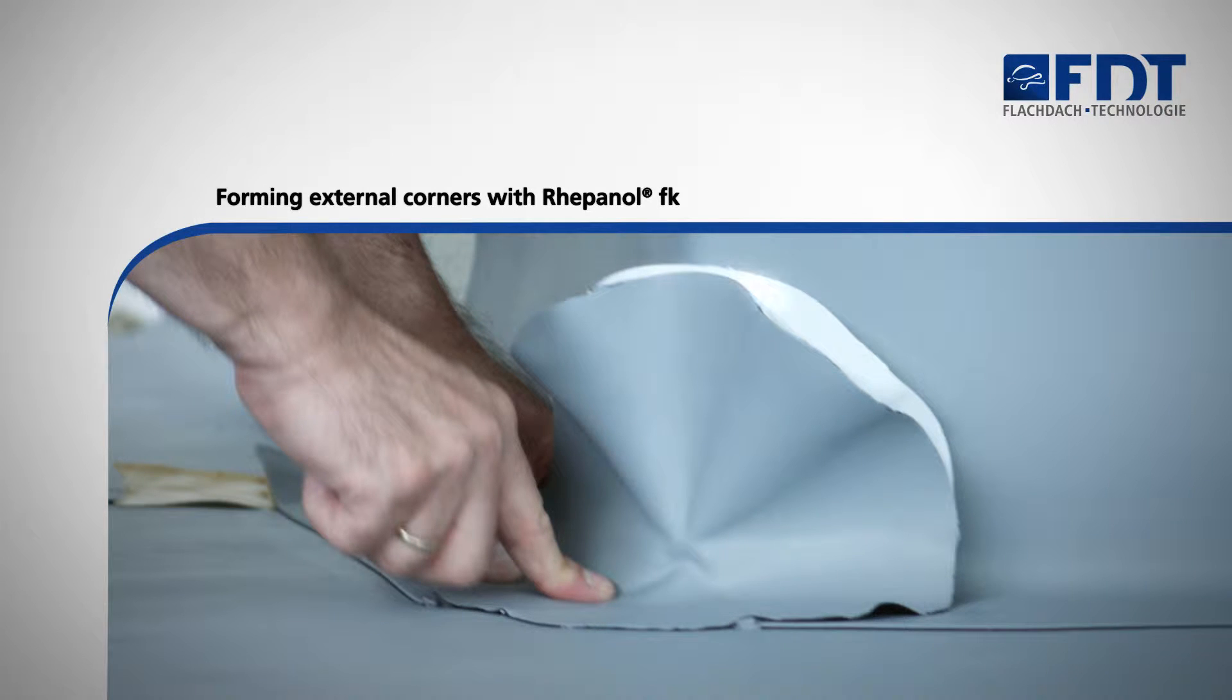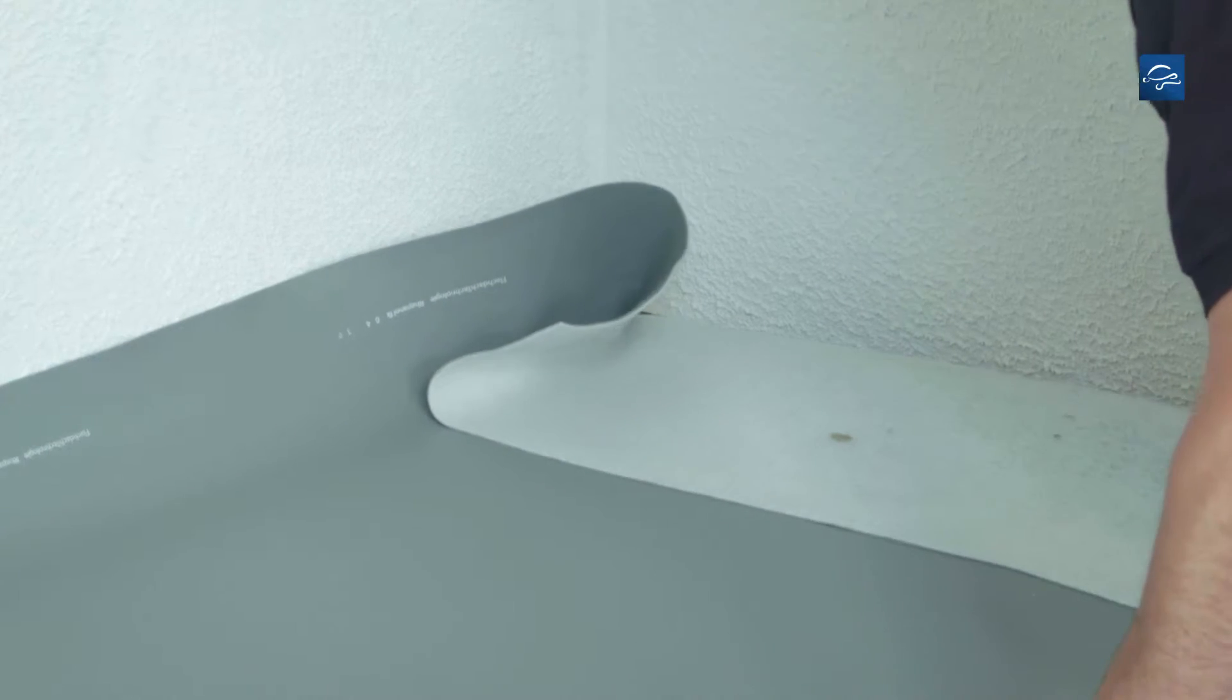This video shows you how to form external corners with Repanol FK. We have shown you how to flash the membrane against the wall in a separate video.